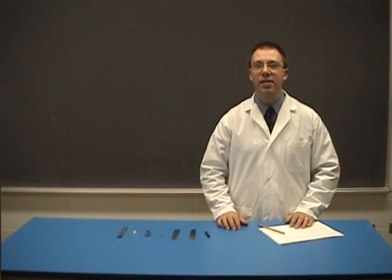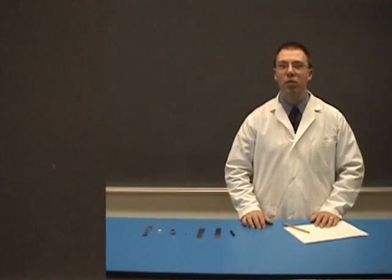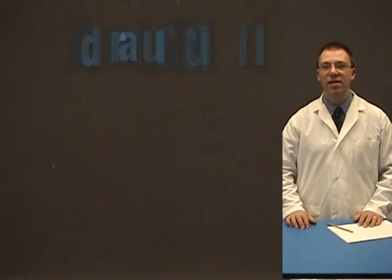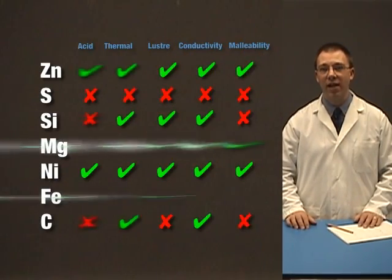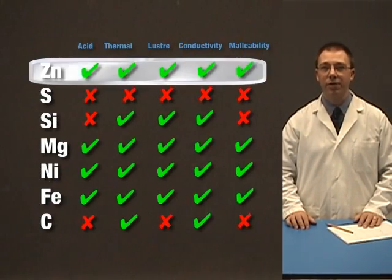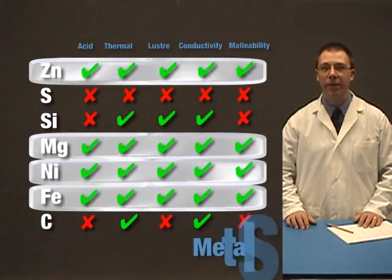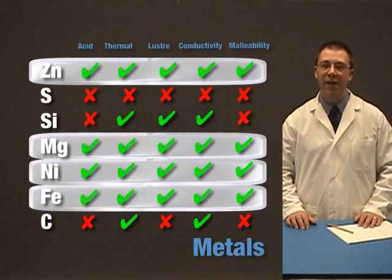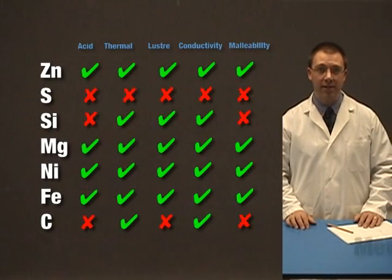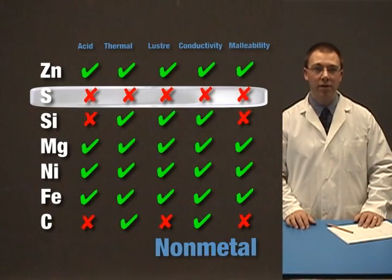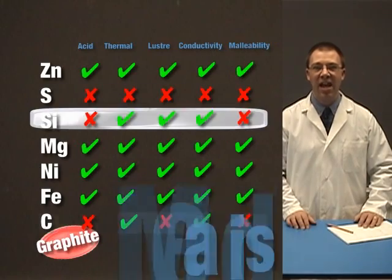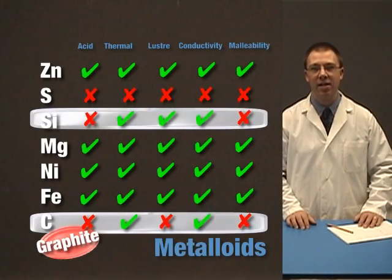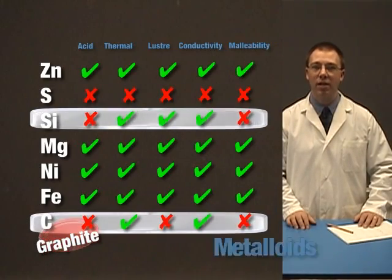After conducting these experiments, we can conclude that the substances that passed all five tests are metals, the substances that failed all five tests are non-metals, and the substances that half-passed and half-failed the tests are metalloids.